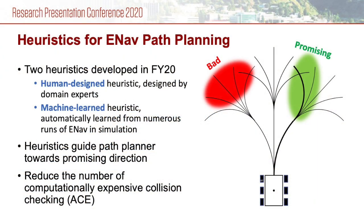In this context, a planning intuition is called a search heuristic. In FY20, we developed two heuristics: one hand designed and one machine learned. The main computational bottleneck of ENAV is that it has to run a collision checking algorithm called ACE thousands of times when searching for a safe path in a tree. Both heuristics aim to find a safe and efficient path with fewer ACE evaluations.